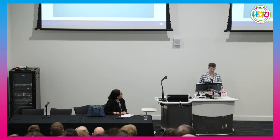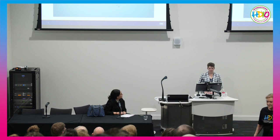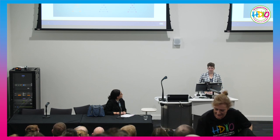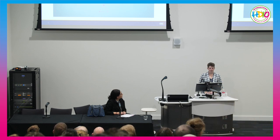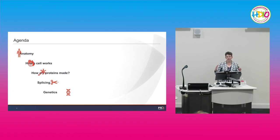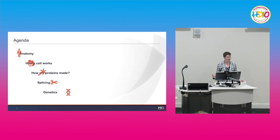Splicing is a very complex biological process. What we do as scientists is try to understand this complex natural process and translate it into something useful — in this case, we're trying to make a drug out of it. We're going to talk first about anatomy, just to give you a sense of where all of this is happening. We'll talk about how cells work, because splicing happens inside cells. We'll talk about how proteins are made — that's the magic of splicing — and some details about splicing itself. Then we'll wrap up with how this affects your genes and genetics.